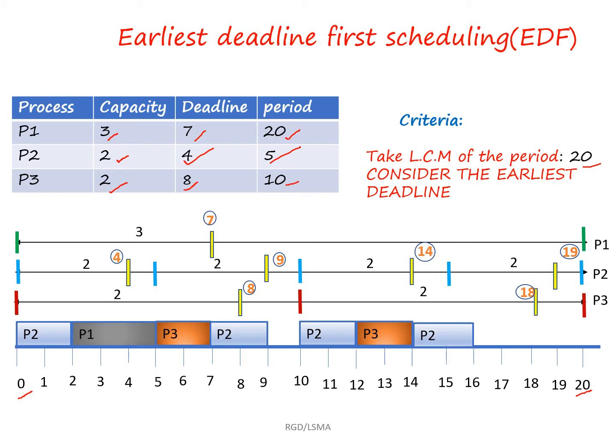The second criterion is to consider the earliest deadline and allocate the process accordingly. For P1, it has to execute 3 units over a period of 20, and it must complete execution before deadline 7.